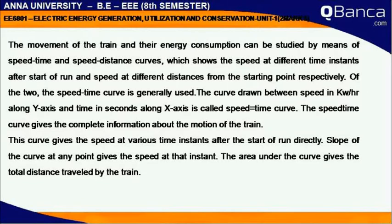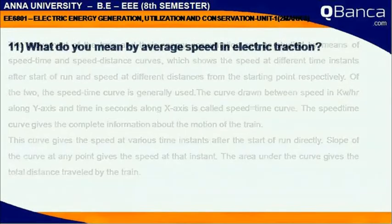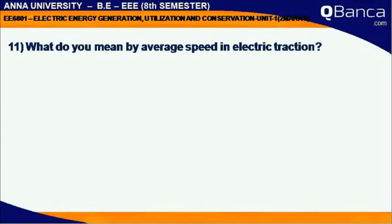This curve gives the speed at various time instances after the start of run directly. The slope of the curve at any point gives the acceleration at that instant. The area under the curve gives the total distance travelled by the train.